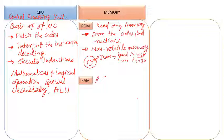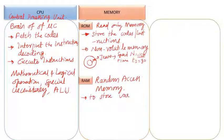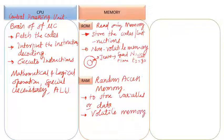RAM — random access memory — is used to store variables or data generated at the time of execution of an instruction. Unlike ROM, random access memory is volatile in nature. Volatile means that when the device is turned off, whatever data was stored previously gets erased and that data is lost. The next time an instruction is executed, new data will be stored.